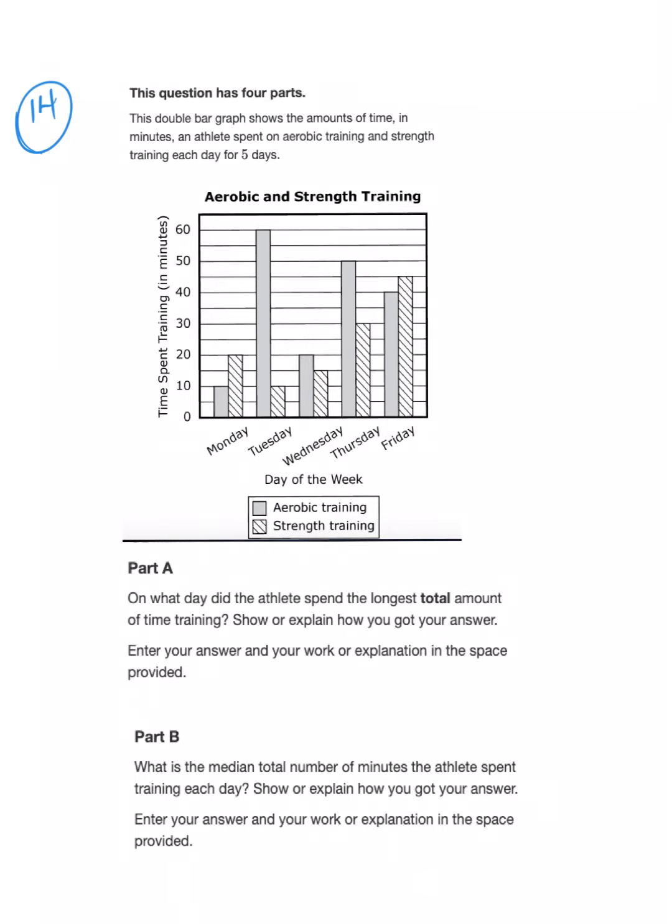Number 14 is an open response. All open responses have four parts, A through D. The tricky part with open responses is that you have to either show all of your work or explain in words how you got your answer. If you just put the answer down with no explanation, even if it's right, they will not give you credit. This double bar graph shows the amount of time in minutes—that's important—an athlete spent on aerobic training and strength training each day for five days.